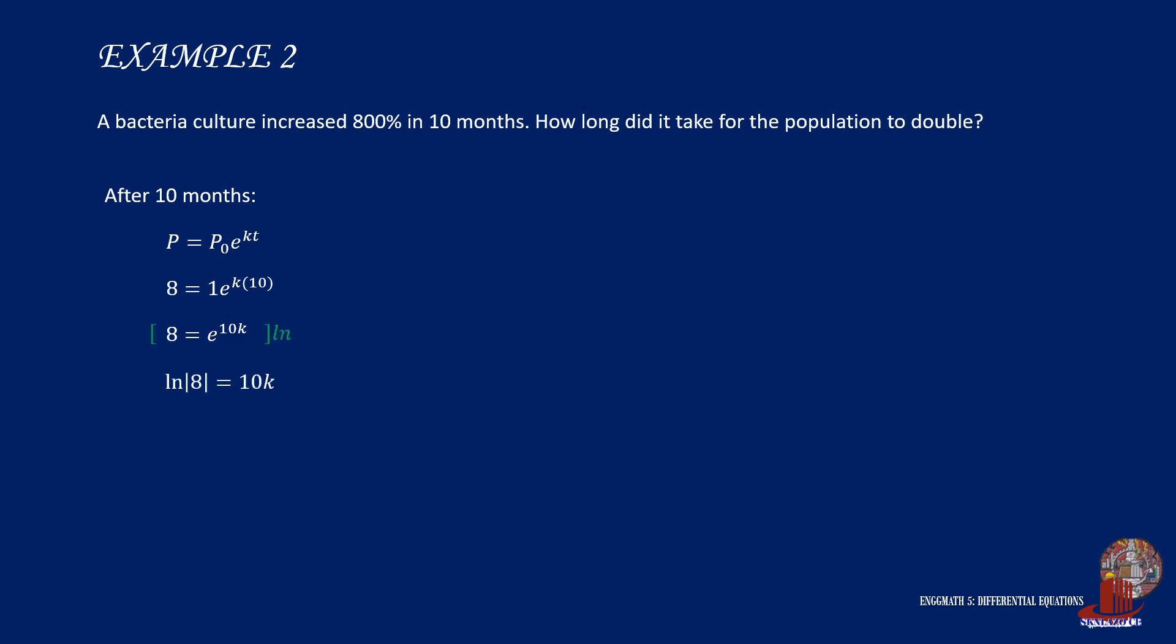Multiply everything with natural logarithm. So ln of 8 is now 10k, and k is computed as ln of 8 over 10, which is 0.207944. So the working equation is completed as p equals p0 times e raised to 0.207944 times t.